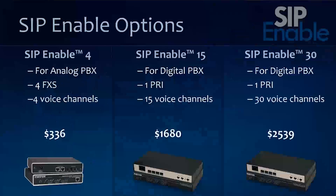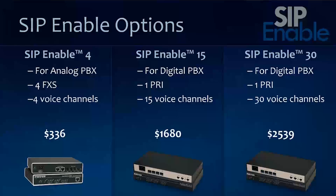There are three different products in the lineup: SIP Enable 4, 15, and 30. The 4 is for analog PBXs — supports 4 FXO ports and 4 voice channels. You can stack those for six, eight, or ten lines. Once you get above that, customers usually have a PRI circuit, so we have 15 and 30-channel options for those. The initial price point may seem high, but when you look at the cost savings using VoIP trunks, this is typically about a five to six month ROI, after which it starts paying for itself very quickly.